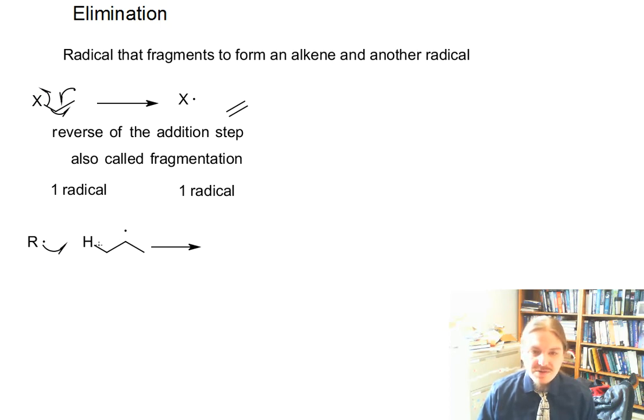So if I have whatever this radical is bump into an abstract a hydrogen, instead of just leaving another radical behind, if there's already a radical on that chain, when this hydrogen is removed, you could end up with an alkene.